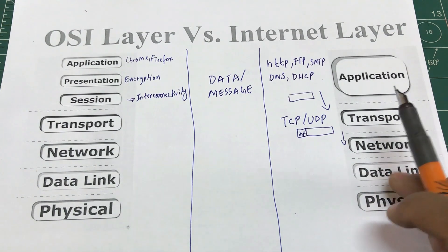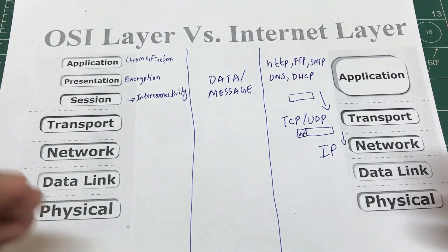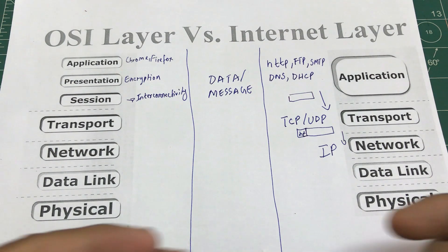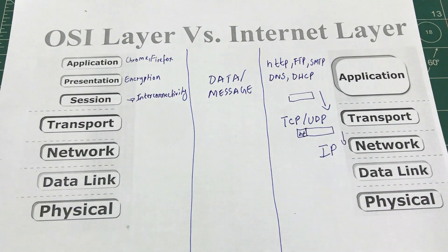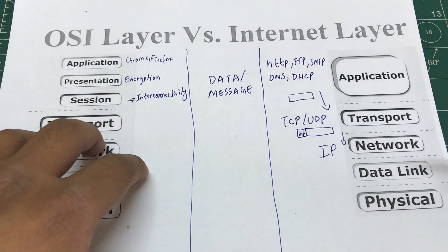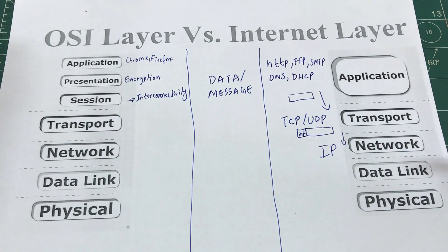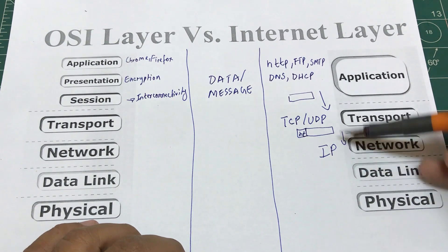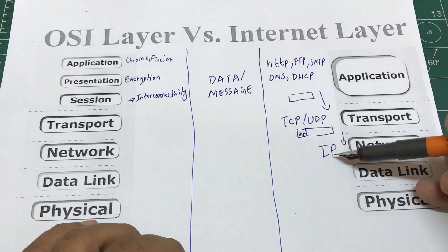At the network layer, one of the dominant protocols is IP — IP address. Think of IP address like a logical address. Your MAC address is embedded on your network interface card and is unique to every device — like a permanent address. But an IP address can change depending on whether you're on a public or private network — it's like your current location.